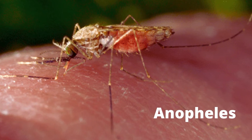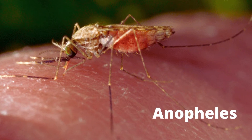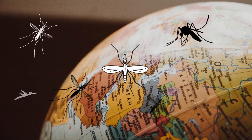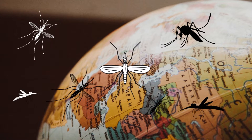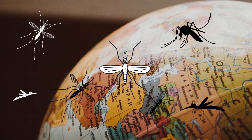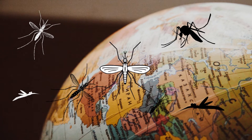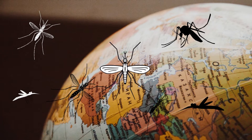Anopheles is a genus of mosquito, first described and named by J.W. Meigen in 1818. Anopheles mosquitoes are related to order Diptera. About 460 species are recognized, while over 100 can transmit human malaria. Only 30 to 40 commonly transmit parasites of the genus Plasmodium, which cause malaria in humans in endemic areas.